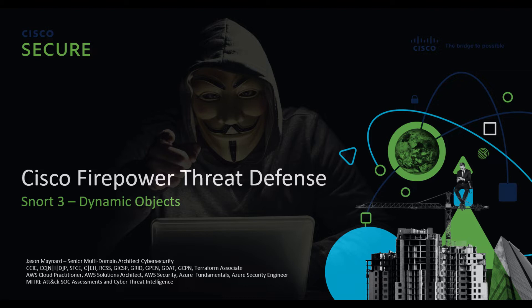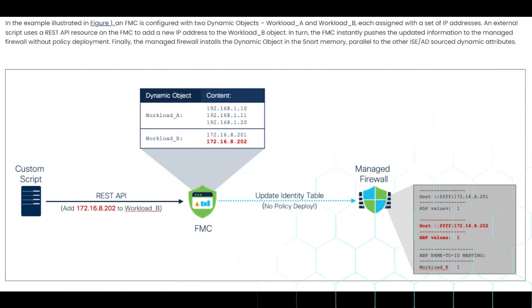Here's an image to give perspective on how this works. We've got a couple of workloads whose IPs may change — think of AWS, Azure, and cloud infrastructures. The dynamic nature of deploying systems and workloads makes this a critical need: the ability to have policy enabled within Firepower that dynamically gets updated when IPs change, without having to do a policy push. That's what dynamic objects does.